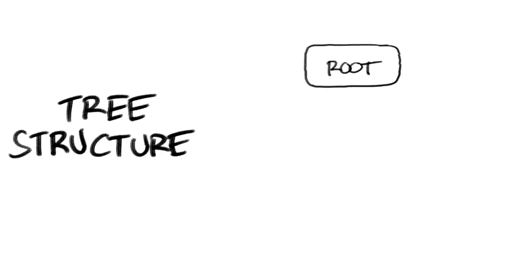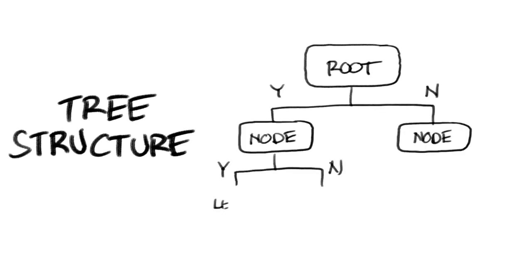A decision tree starts with a single root node which is given the full training set. The node will then ask a yes-no question about one of the features and split into two subsets of data which is now the input of a child node.